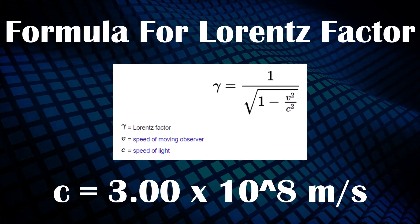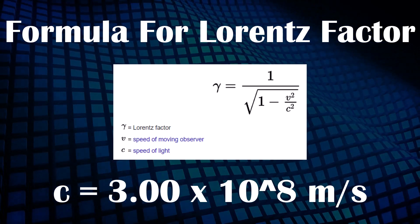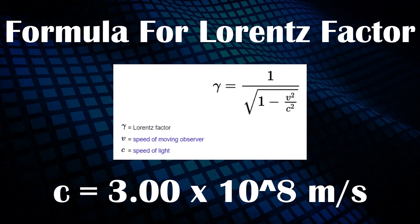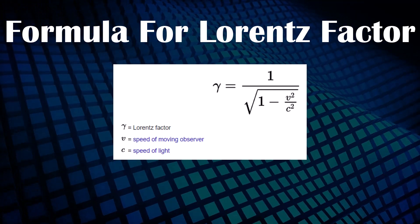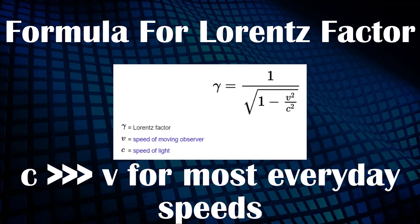For example, people typically walk at a couple meters per second, cars can travel at tens of meters per second, and even things such as bullets and sound travel at hundreds of meters per second. Subbing in any of those everyday values of speed will leave you with gamma equals one, since the speed of light is so incomprehensibly faster than it, that gamma barely changes.